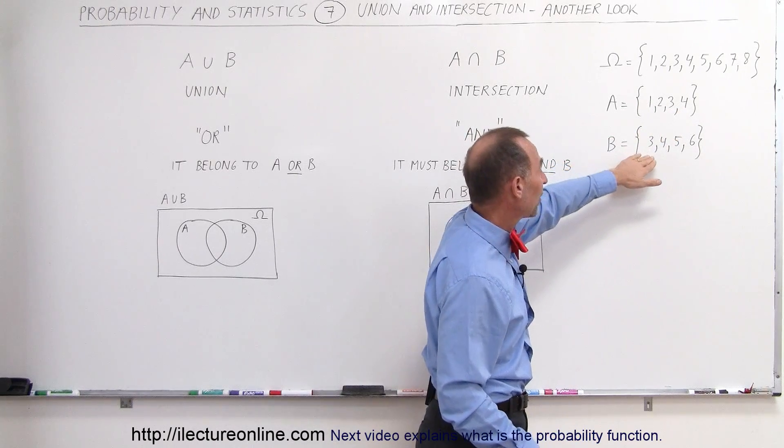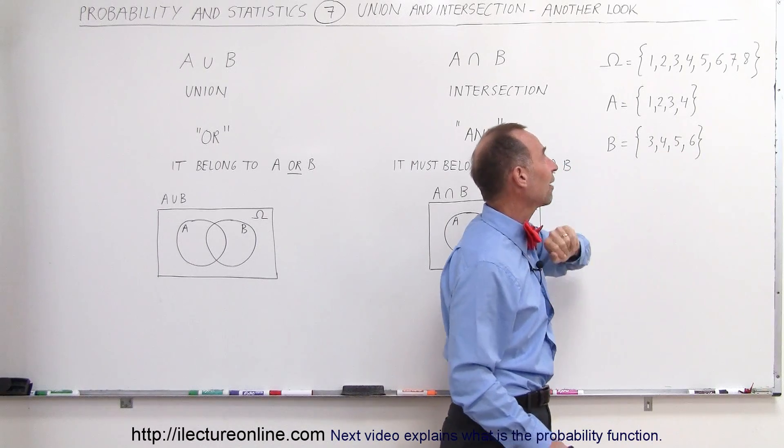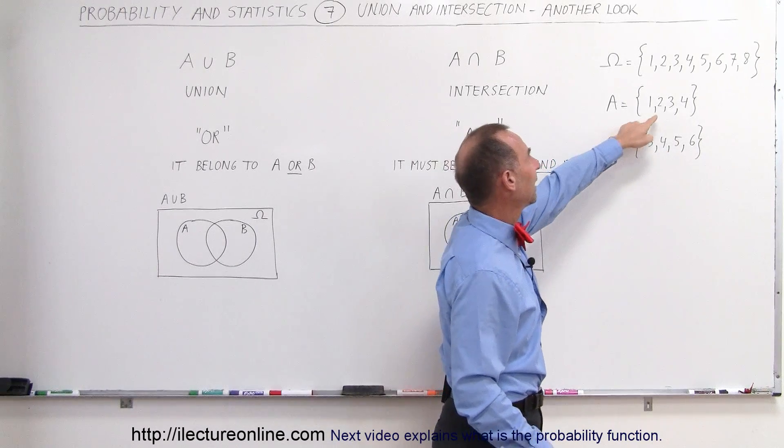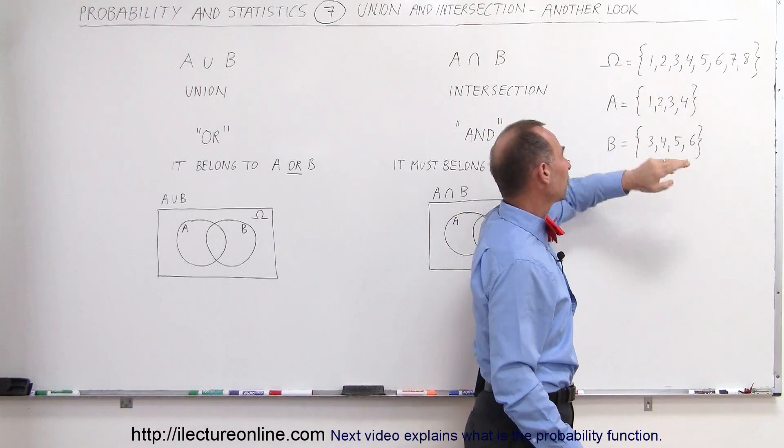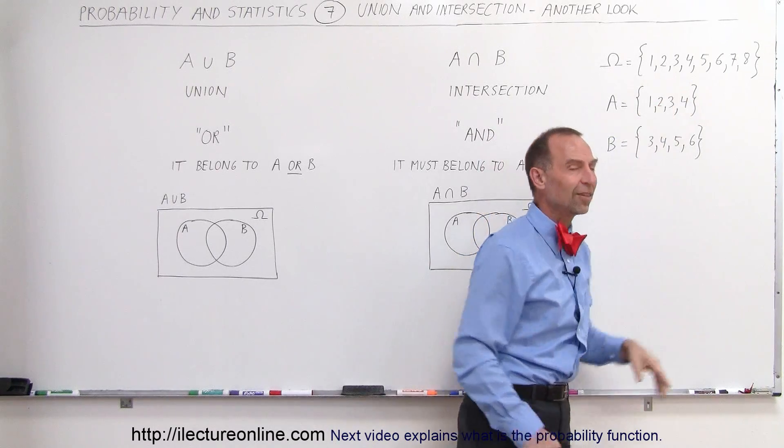And this is event B. Here are the possible outcomes for event B: 3, 4, 5, 6. Notice that A is a subset of the sample space, and B is a subset of the sample space.